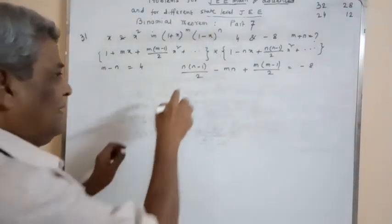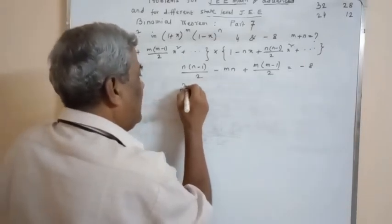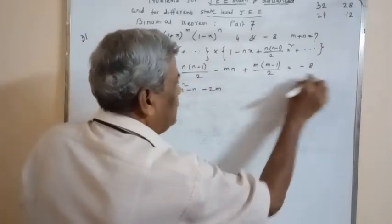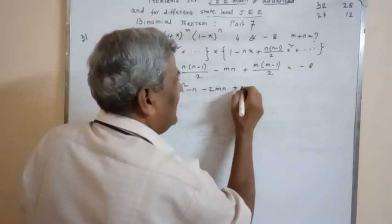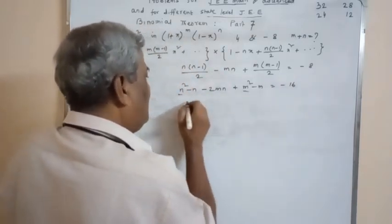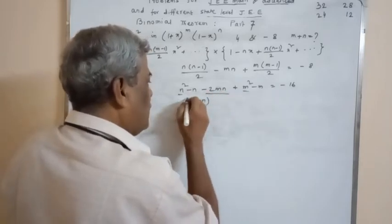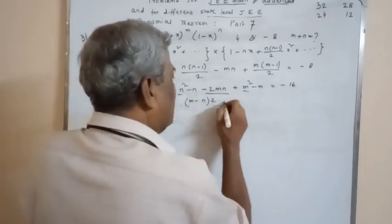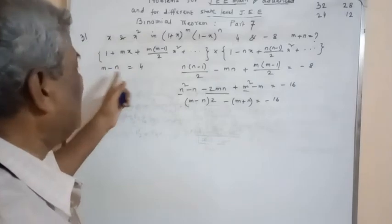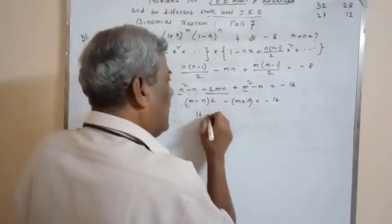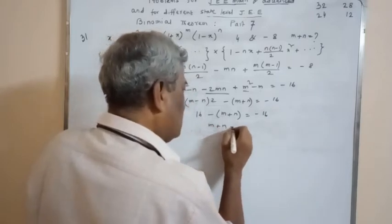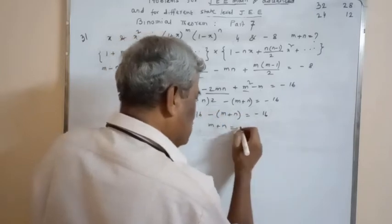We have to find m+n. Simplifying the x² equation: n(n-1)/2 - mn + m(m-1)/2 = -8. Multiplying throughout by 2: n(n-1) - 2mn + m(m-1) = -16. That simplifies to m² - n = -16. But m - n = 4, so 16 - (m+n) = -16. Therefore m+n = 32. Option A is correct.